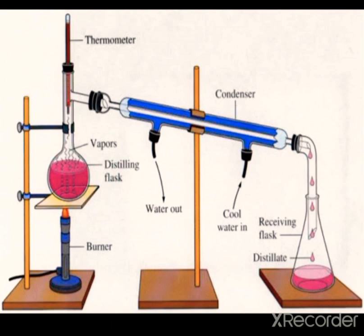For example, tap water contains dissolved salts and dirt, which can be purified by distillation. When the solution is heated with a burner, water boils at 100 degrees centigrade — visible on the thermometer. The vapors evaporate and move into the condenser, where the cooling water causes them to condense back into droplets. These droplets are then collected as distillate in the receiving flask.